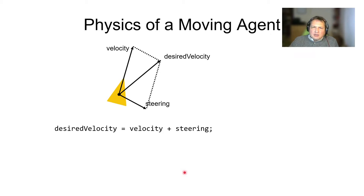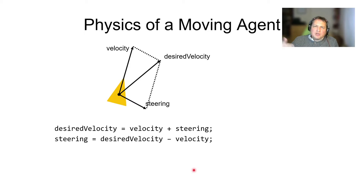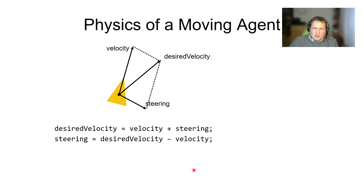Our controlling task in every frame of simulation of a moving autonomous agent is to find the value of steering. This value of steering can be found from the formula: desired velocity minus current velocity. If the value of steering is large, the change in velocity will be aggressive. So to keep it reasonably low and to achieve soft, fluid motion, you should apply reasonably low values of steering.